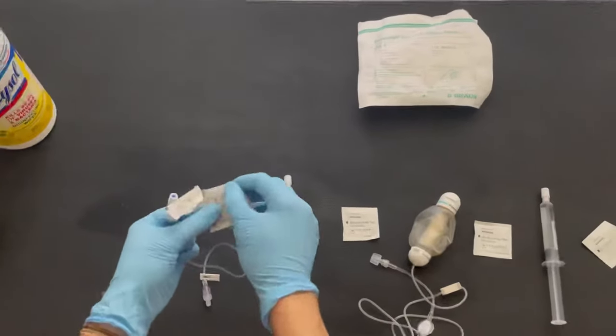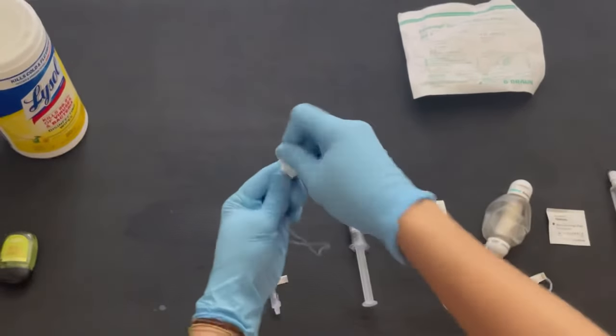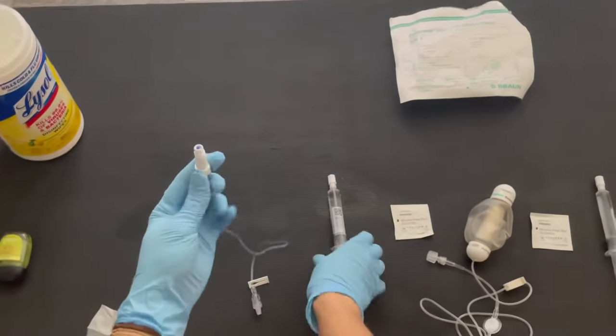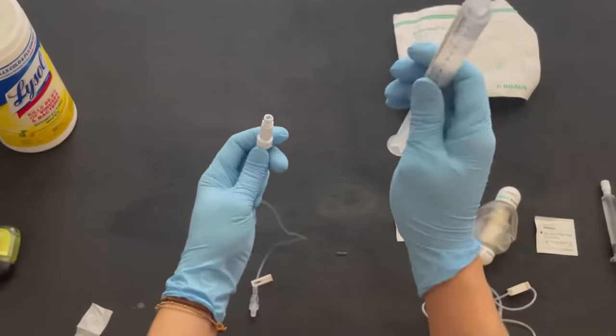Open the extension tubing like I did just there, and then you go ahead and clean the hub. Scrub the hub for 20 seconds and then let it dry again for 15 to 20 seconds, and then you're going to go ahead and follow through.